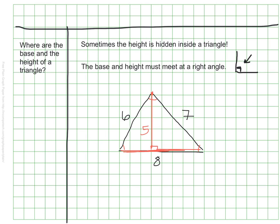Now that I have my base of 8 and my height of 5, I can go ahead and do my normal calculation for area. So 8 times 5 would be 40, but then I have to divide that by 2. So the area here is 20 units squared.